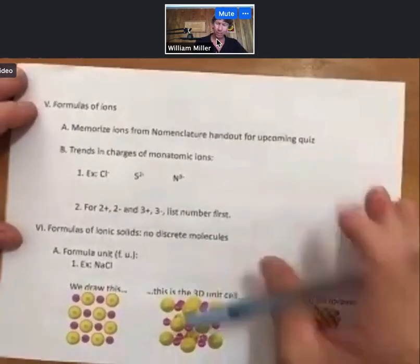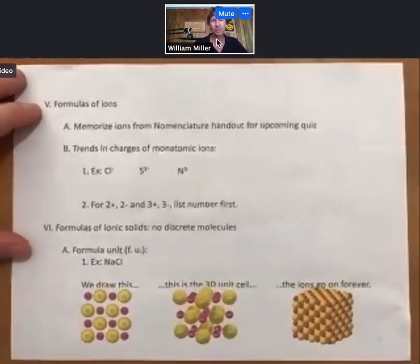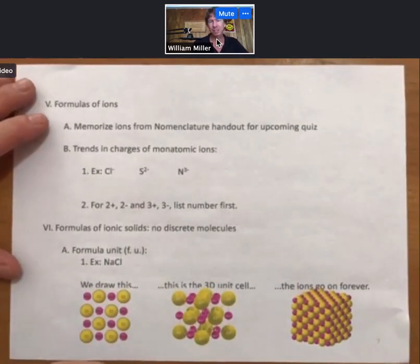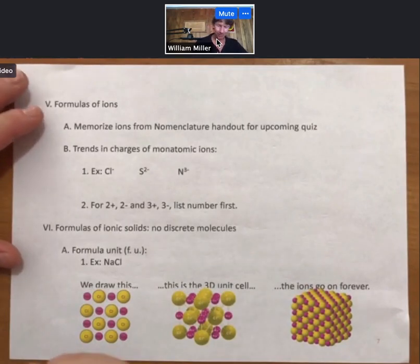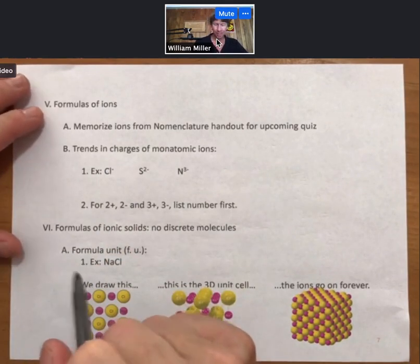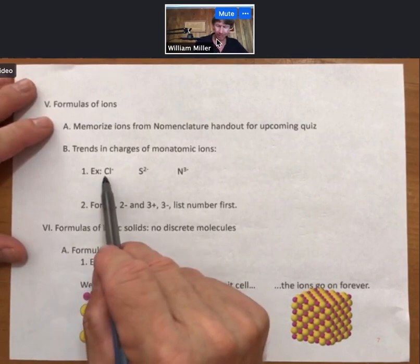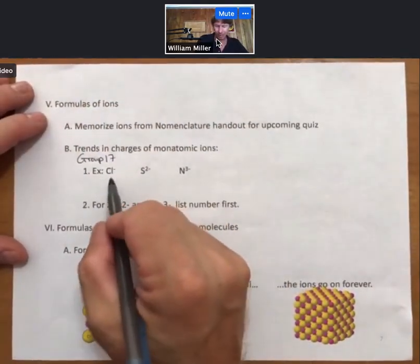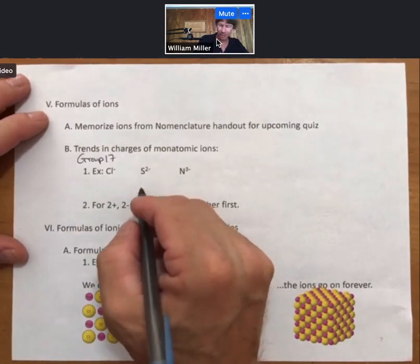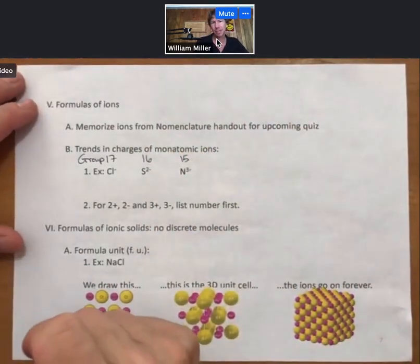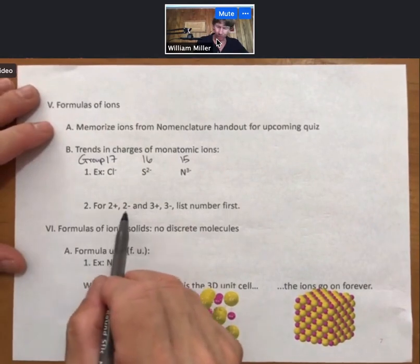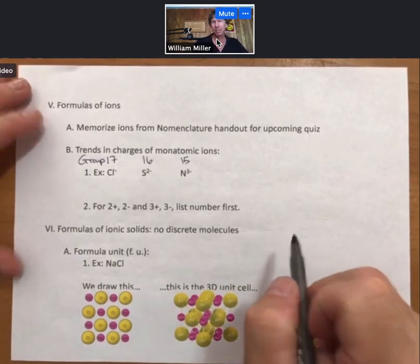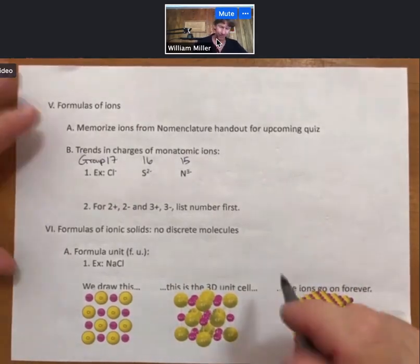Formulas of ions. Well, we are going to have an ion quiz. Ions will be part of your exams. You're going to need to memorize the ions from the nomenclature handout. The nomenclature handout is in the syllabus section of your learning management system. There are trends in the charges of the monatomic ions. And these include going from the halogens, which are group 17, to sulfur's group or oxygen's group. Those form the minus two ions. Those are group 16. Group 15 has nitrogen. And they have minus three charges. For charges that are two plus, two minus, three plus, three minus, the convention is to list the number first when it's for an ion. Although if you were to list it as plus two or plus three, that's fine for me.